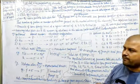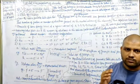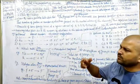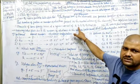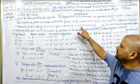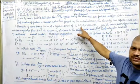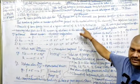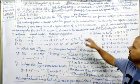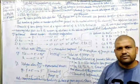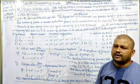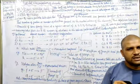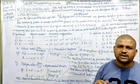Elements of the same family recur at regular intervals of 2, 8, 8, 18, 18, 18, and 32. After the first period — after two elements — the same property is repeated. In the second period, after eight elements, the same property is repeated. In the third period, after eight elements, the same property is repeated. In the fifth period, after 18 elements, the same property is repeated. In the sixth period, after 32 elements, the same property is repeated.